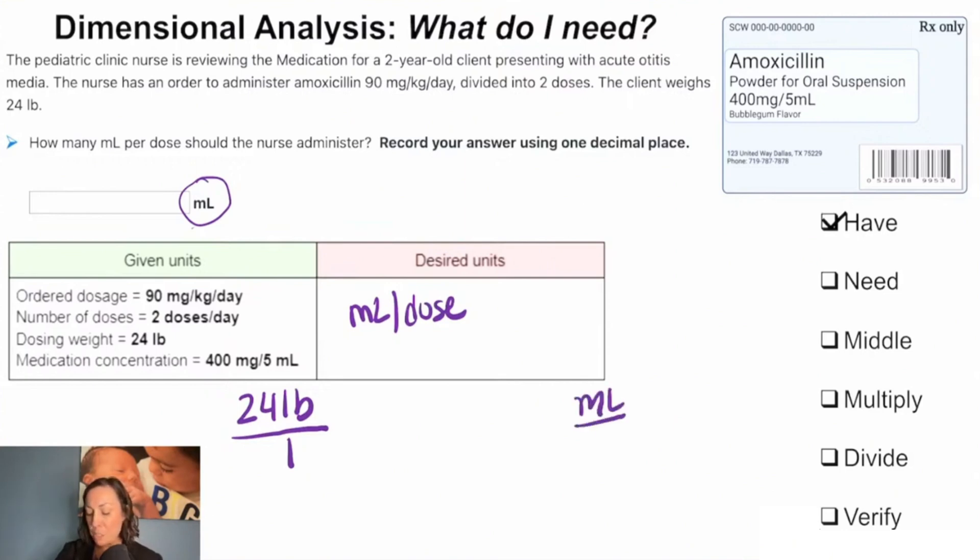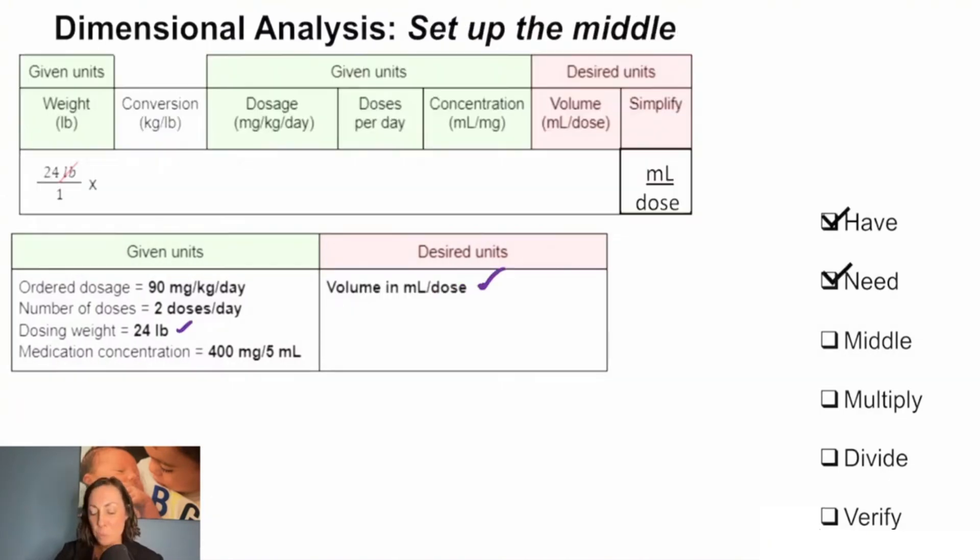We're trying to find our milliliters per dose, so now we'll set up the middle and do that conversion. We're going to put one kilogram on top over 2.2 pounds, so this way our pounds will cancel off, right? We know that there's 2.2 pounds per kilogram. Next, we can go to our next step here where we can pick another of the other items to plug in. I see all y'all with your 2.2, perfect.